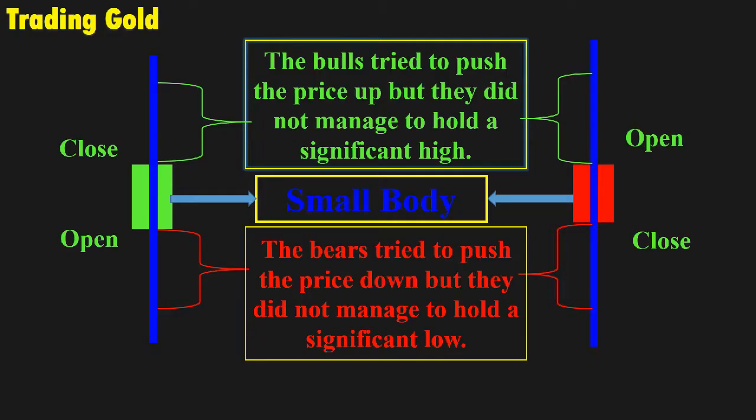While the long shadows indicate that both buyers and sellers were active during the session. Children's spinning tops are the inspiration for the naming of the spinning top candlestick pattern. Similar in shape to its toy counterpart, a spinning top has a short body, black or white, and two long shadows.